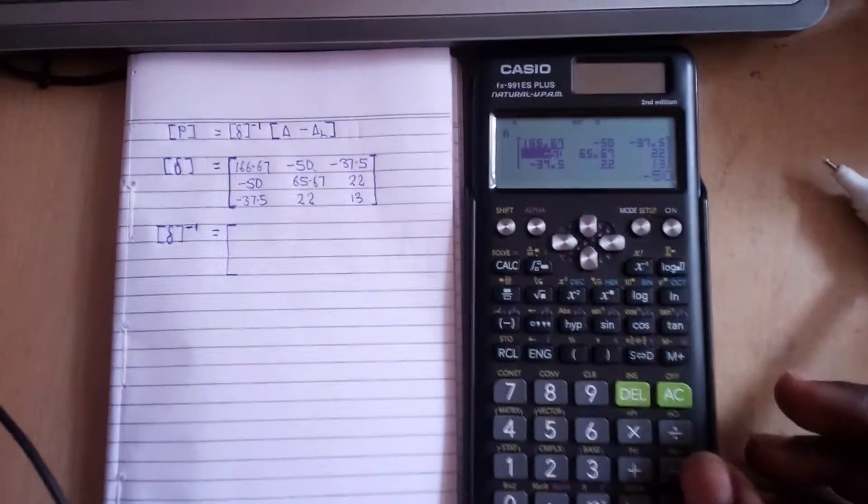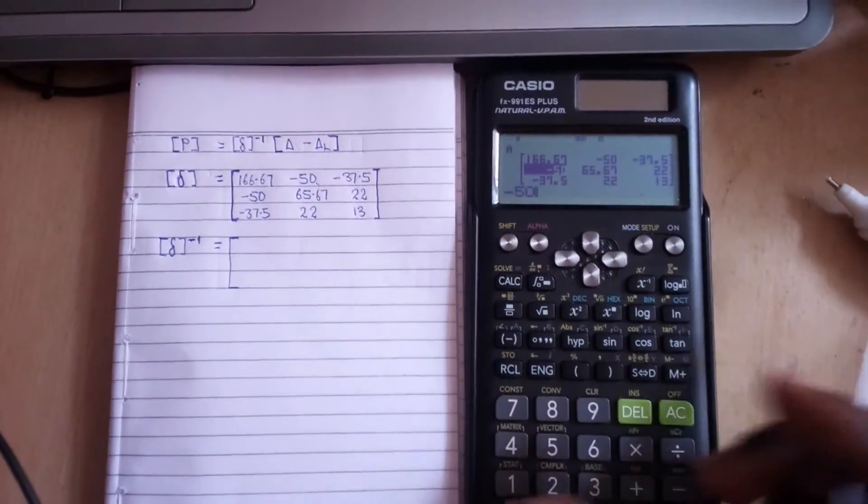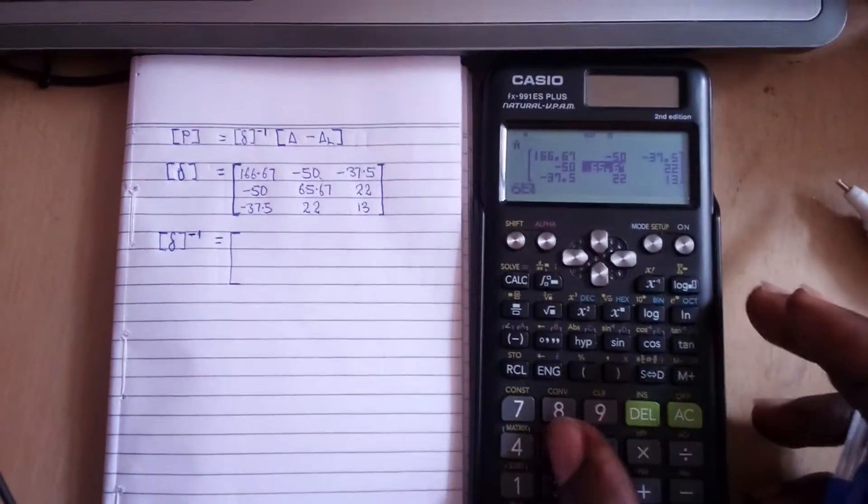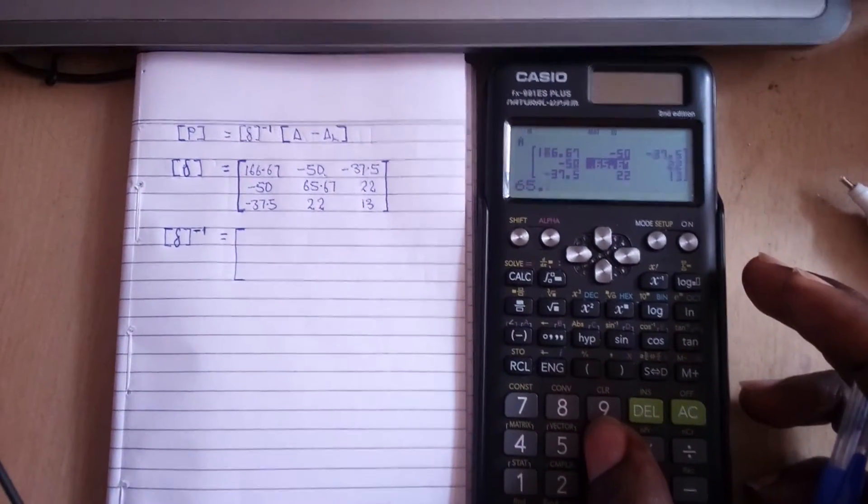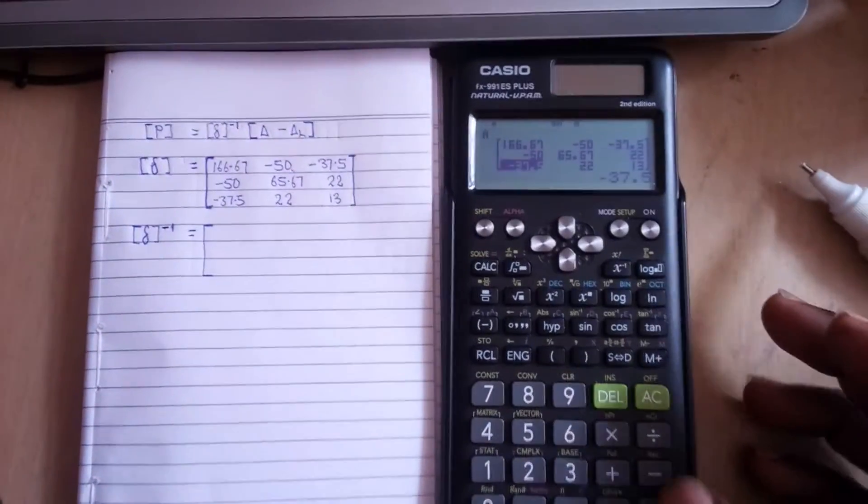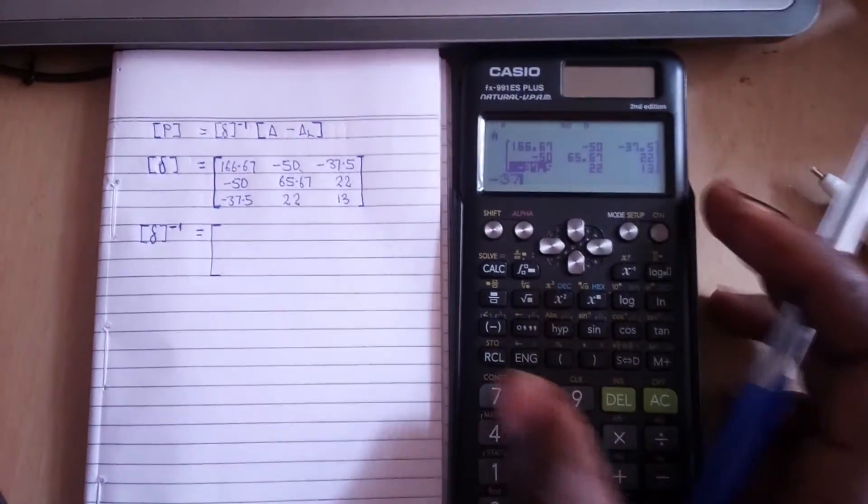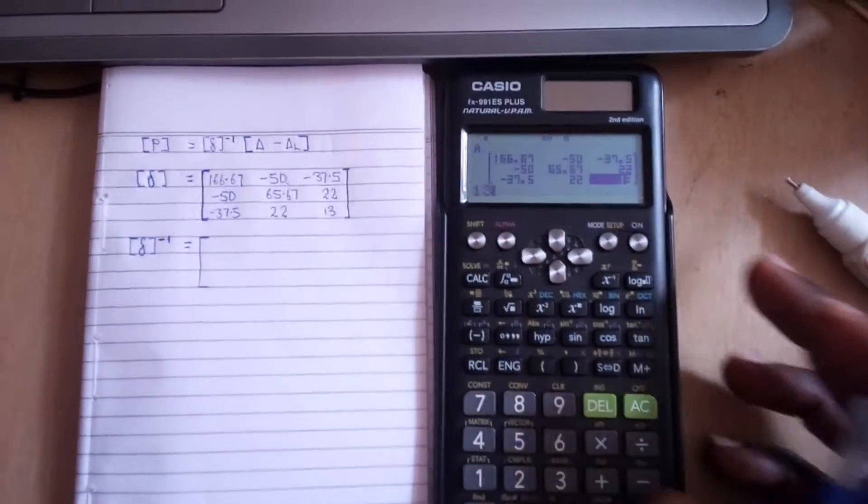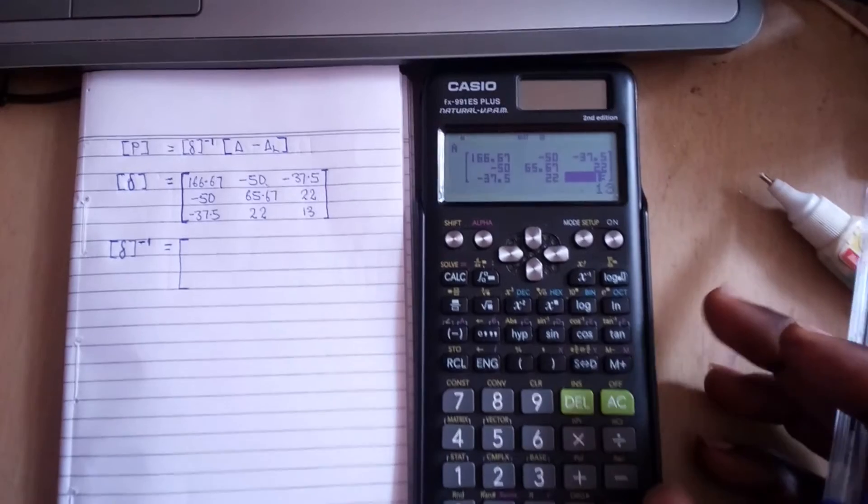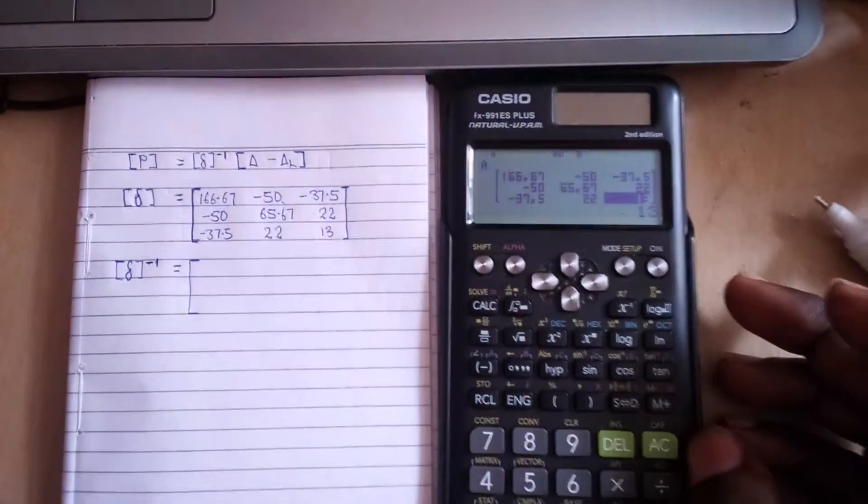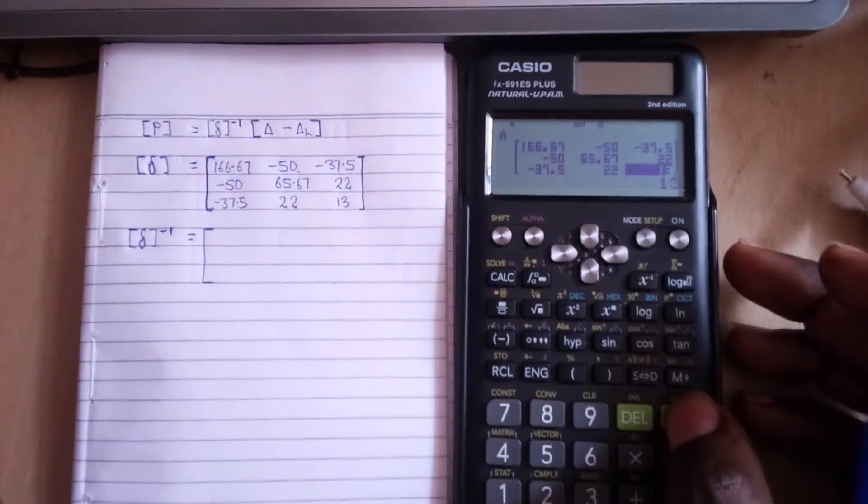It moves again to the next one. I'm going to type 65.67, equal to, 22, equal to. Keep typing minus 37.5, equal to, 22, equal to, and 18. When you are done you press equal to and that's all. You just press AC.